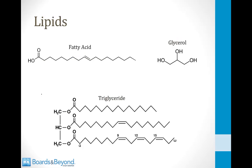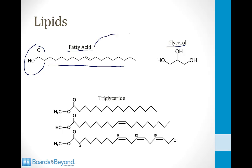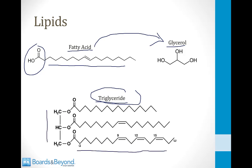The reason we need bile salts in our bile is to help us absorb lipids, so let's talk about the type of lipids you consume when you eat foods. On the screen here is the structure of a fatty acid — it has a carboxylic acid group on the end and then a long chain of carbons and hydrogens. Also on the screen is a molecule of glycerol. If you link three fatty acids to a molecule of glycerol you get a structure called a triglyceride, and this is what most of the fats in our diet look like. Most of the fats we consume are triglycerides, made up of a glycerol molecule attached to three different fatty acids.